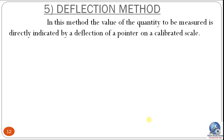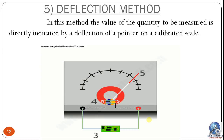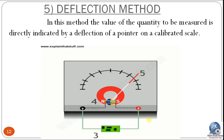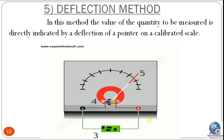In the deflection method, the value of the quantity to be measured is directly indicated by a deflection of a pointer on a calibrated scale. Any changes in values are identified by the movement or deflection of that particular pointer. This is a very simple method.